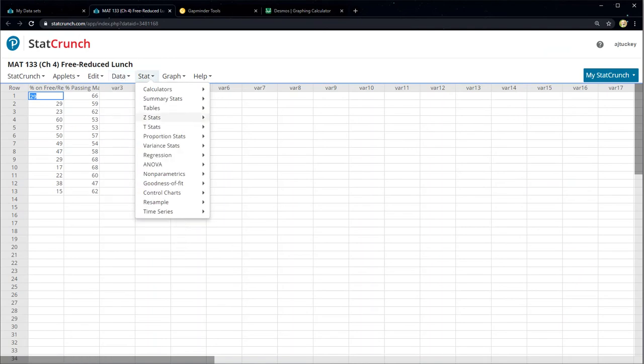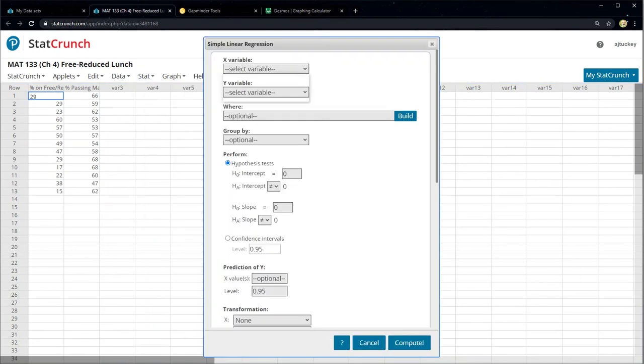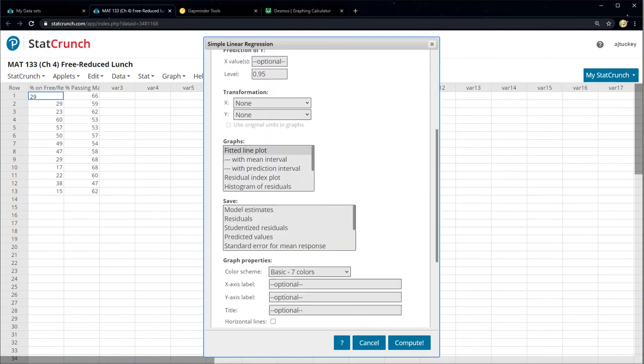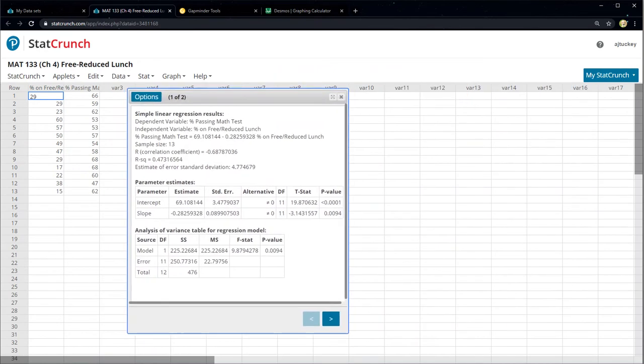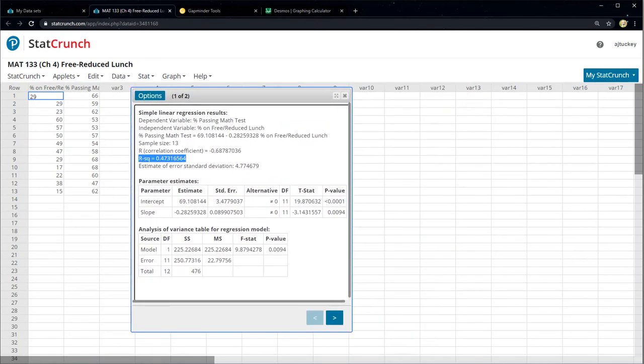We go to Stat, down to Regression, click on Simple Linear. Then choose your x and your y variable. And again, ignore all this other stuff. Just ignore it. We're not using it, so don't worry about it. And you can see R-squared is right here. Rsq stands for squared. So that's your R-squared value.